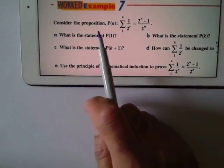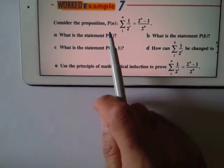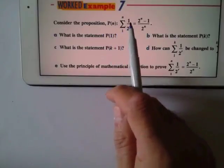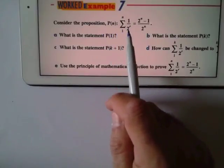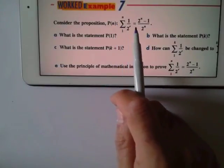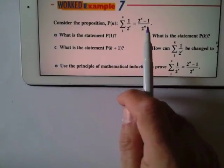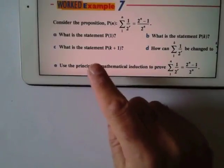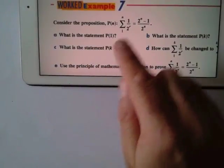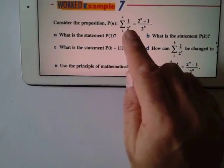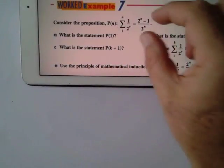Consider the proposition P(N) such that the sum of 1 over 2^R from R=1 to N equals (2^N minus 1) over 2^N. So remember what this means: I believe that the sum of this equals that.